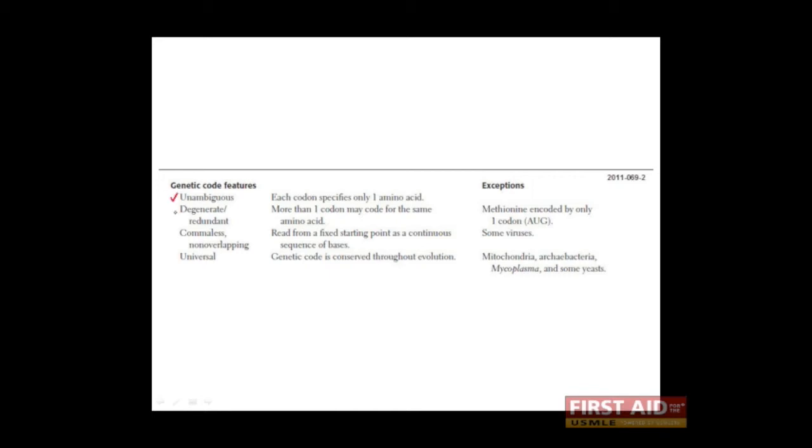The first is that it's unambiguous, the second is that it's degenerate, the third is that it's comma-less or non-overlapping, and the fourth is that it's universal.